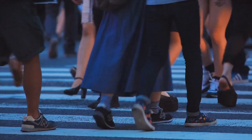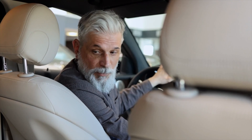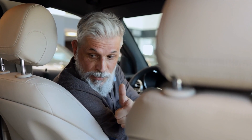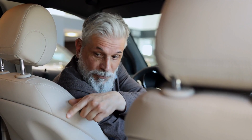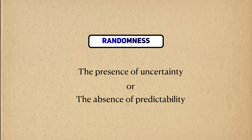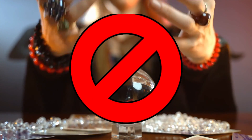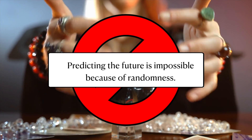The world is a random place. Sometimes you win, sometimes you lose. Sometimes your Uber driver talks to you, and other times they'll talk to you even when you paid a little extra for them not to say anything. We'll define randomness as the presence of uncertainty, or even better, the absence of predictability. Randomness means that no matter how hard you try, you can't perfectly predict what will happen next.